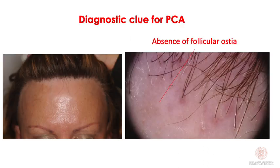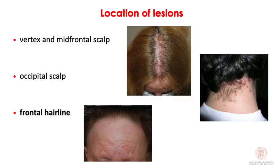It is very important to suspect cicatricial alopecia when you have on clinical examination and trichoscopy the absence of follicular ostia. Based on the location of the disease, you can suspect a specific cicatricial alopecia. In the case of frontal fibrosing alopecia, we suspect it when there is involvement of the frontal hairline.